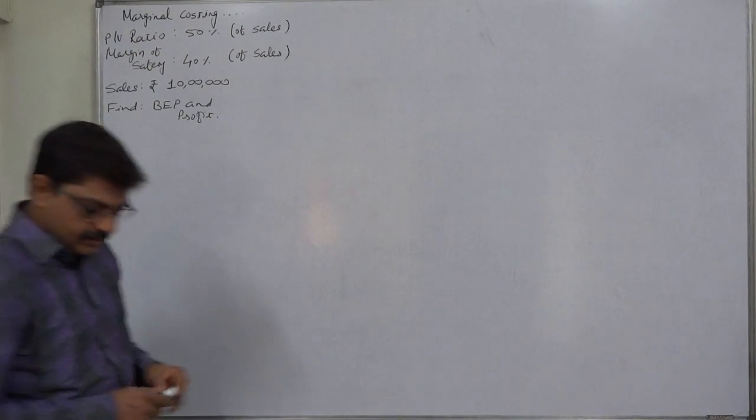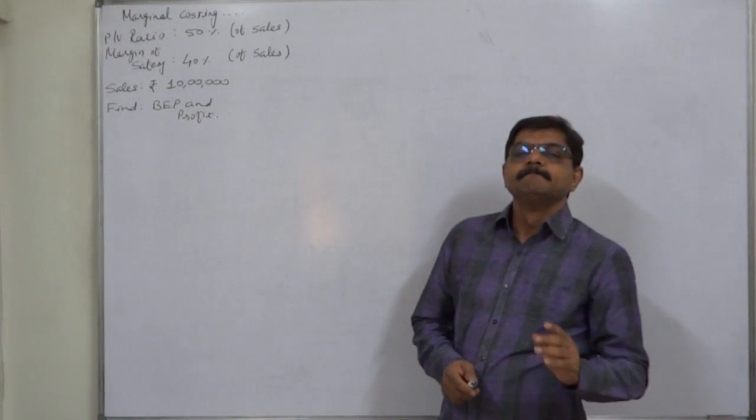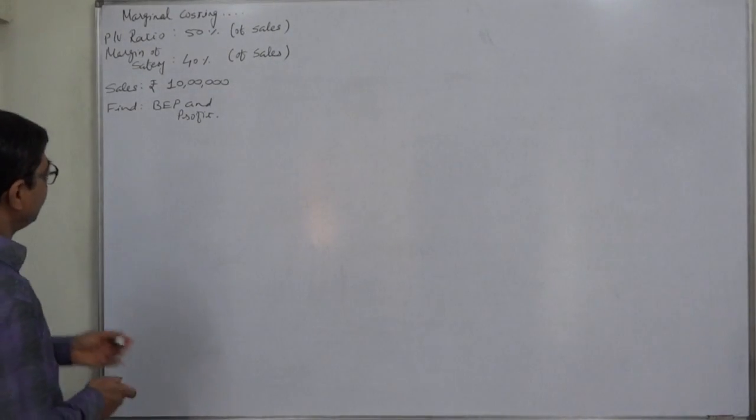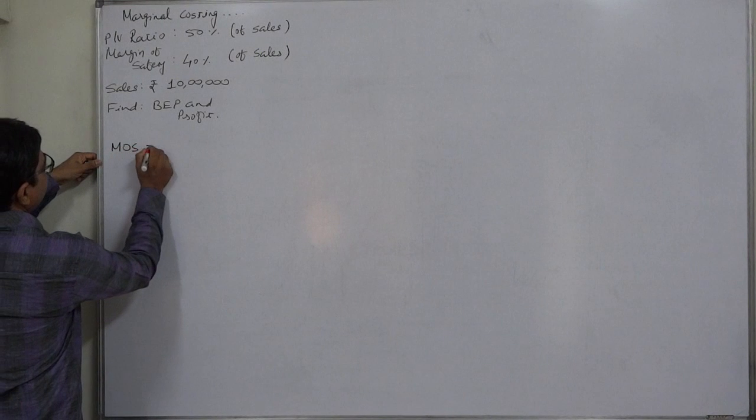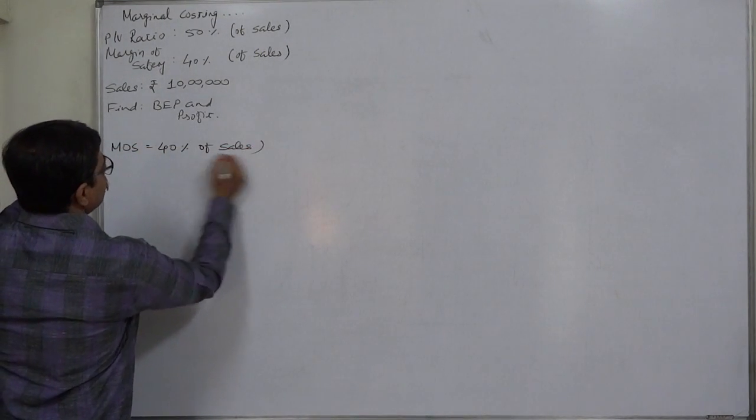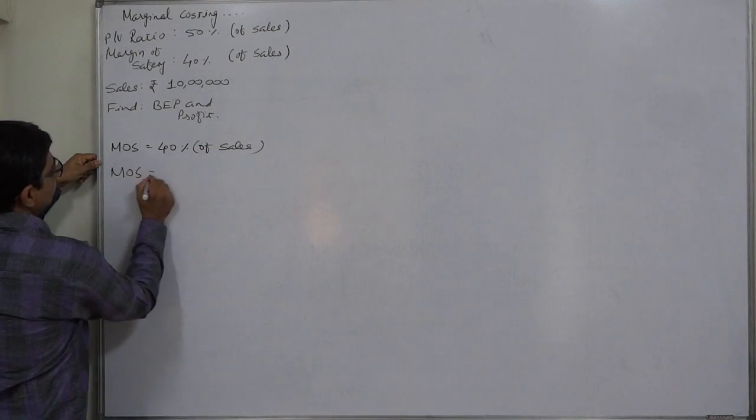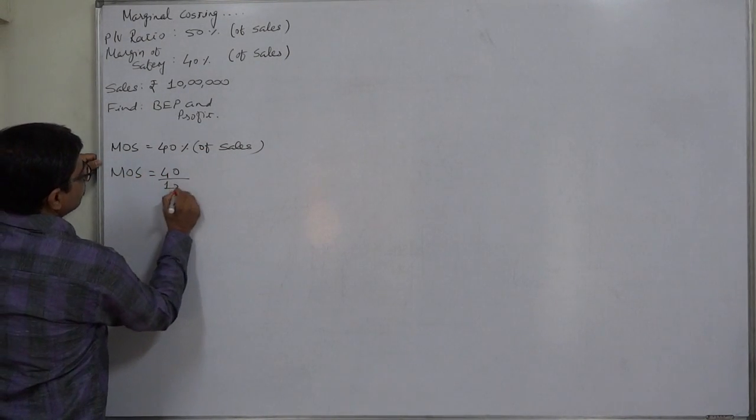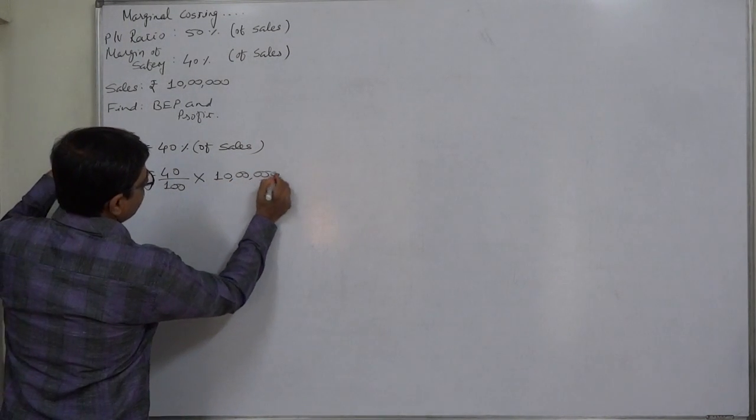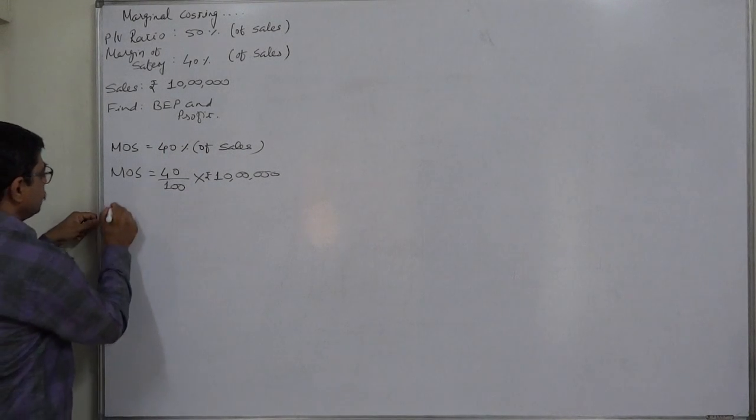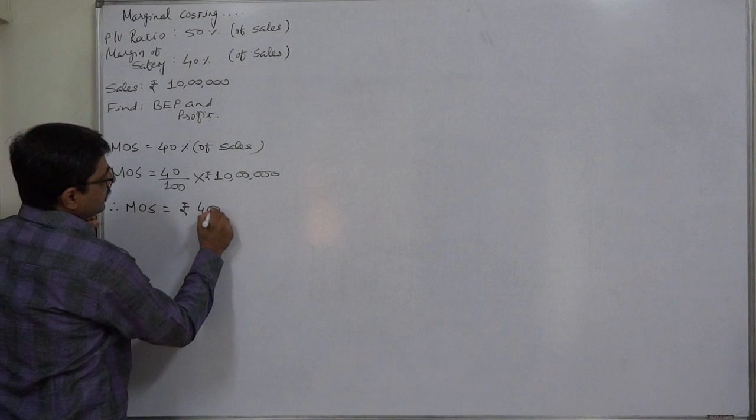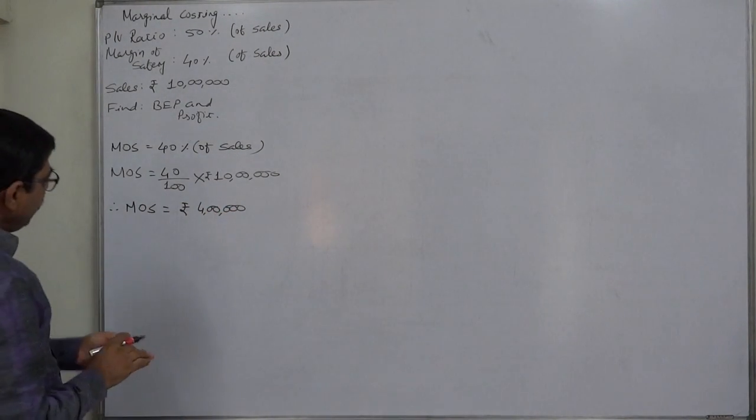Here, the sales have been given as currency value, rupees 1 million or 10 lakh. So, margin of safety equals to 40% of sales is taken into consideration. That means margin of safety equals to 40% of rupees 1 million or 10 lakh. This is the right interpretation. So margin of safety comes to rupees 400,000 or 4 lakh.